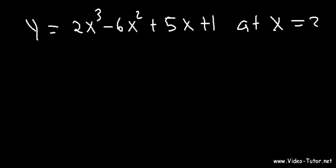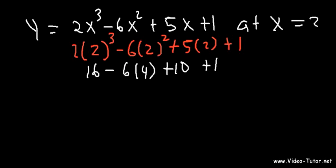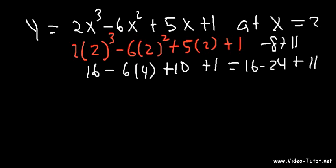First, let's plug in 2 for x. So 2 times 2 to the third minus 6 times 2 squared plus 5 times 2 plus 1. 2 to the third is 8, times 2 is 16. 2 squared is 4. 5 times 2 is 10 plus 1. So here we have 16 minus 24 plus 10 and 1 is 11. 16 minus 24 is negative 8 plus 11. That's 3. So we have the point 2 comma 3.